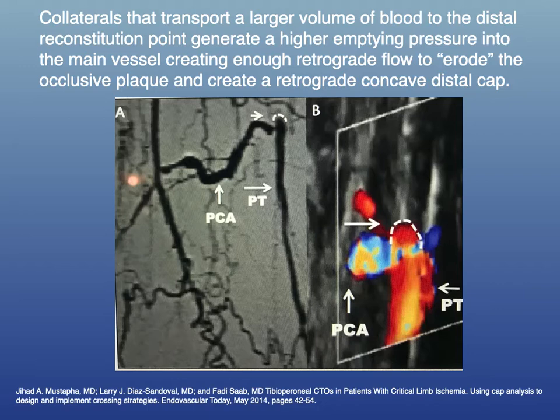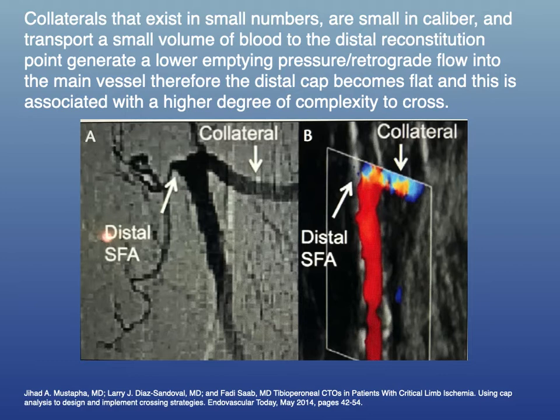There's an interesting article that discusses why certain caps look a certain way. If you look at the distal cap in this example, there are large, numerous collaterals transporting a large volume of blood, and as a result the distal cap was eroded by the pressure of flow from these collaterals, giving it a concave shape. On the other hand, when you have smaller or less robust collaterals, there's less pressure hitting the distal cap, and that cap may be flat or even convex.